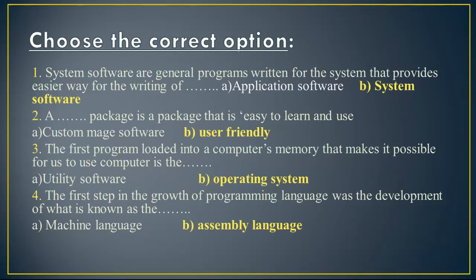Third one: the first program loaded into a computer's memory that makes it possible for us to use the computer is blank. Option A is utility software and option B is operating system. So operating system is correct.